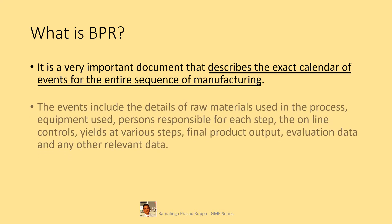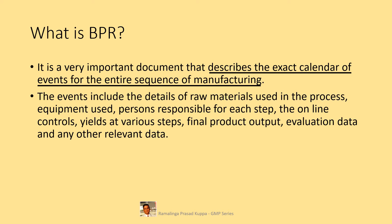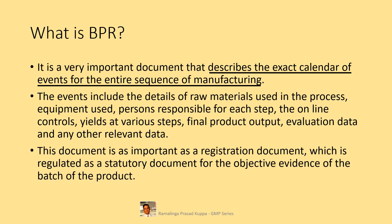Based on the review of the BPR, a decision will be taken whether or not the batch has been manufactured as per the requirement. The events include the details of raw materials used, equipment used, persons responsible for each step, online controls, yields at various steps, final product output, evaluation data, and any other relevant data. This document is as important as a registration document, regulated as a statutory document for the objective evidence of the batch.